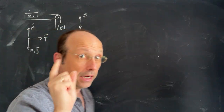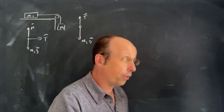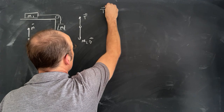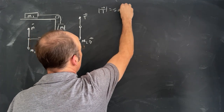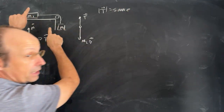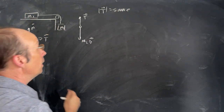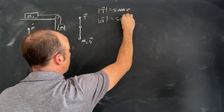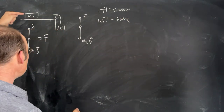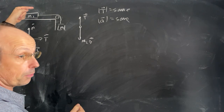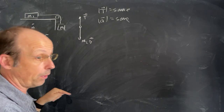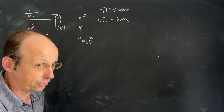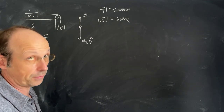With a string, there are two important things. One: the magnitude of the tension is the same for both objects because it's the same string. Two: the magnitude of the acceleration is the same for both objects, because if one moves a little bit that way, the other has to move the same amount — so the acceleration has to be the same.